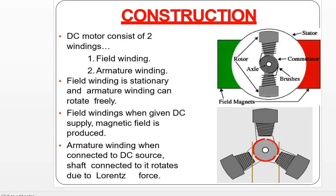If we look at the construction, it mainly involves winding. We have two types of winding: field winding and armature winding. Field winding is stationary — it does not move. When DC supply is given to the field winding, a magnetic field is produced.